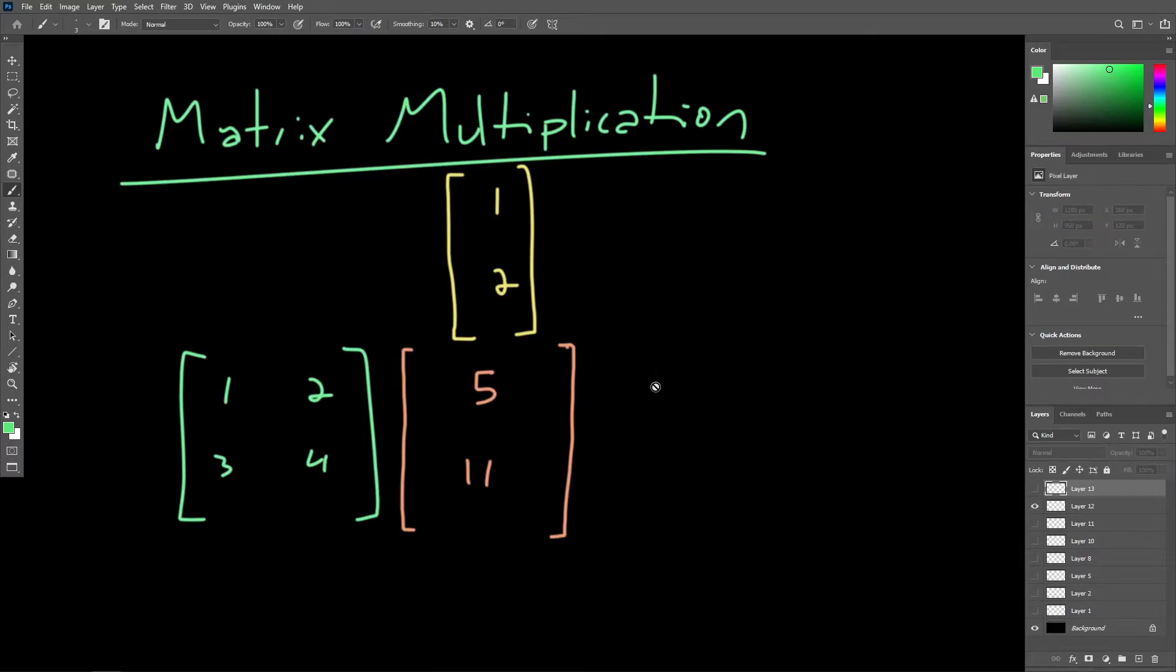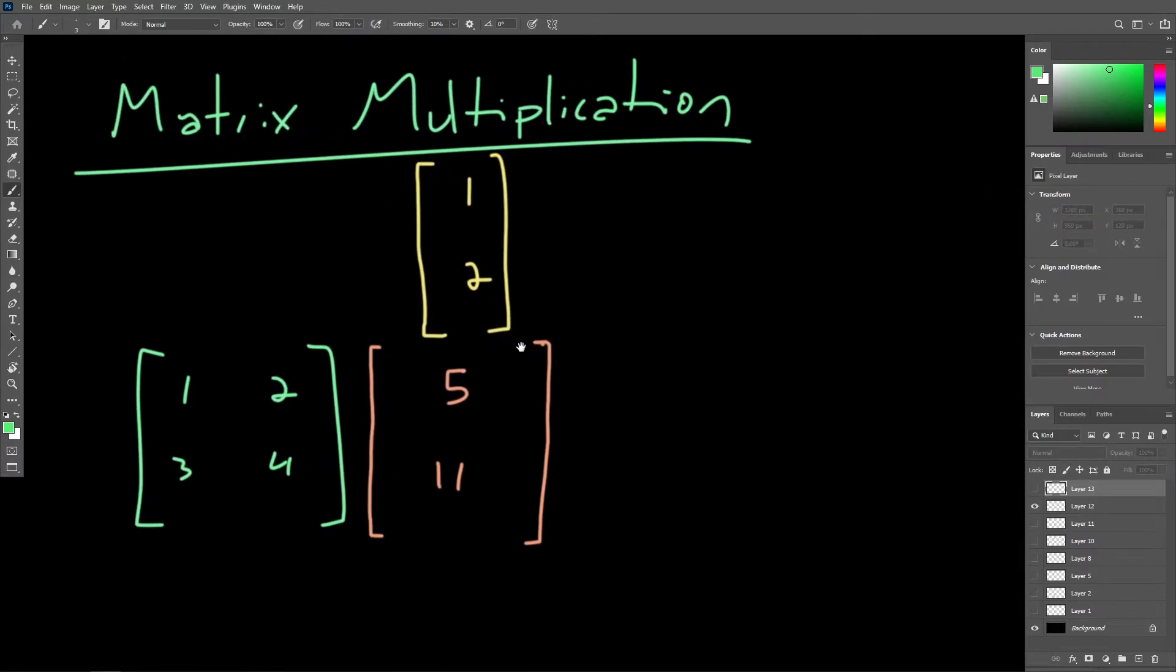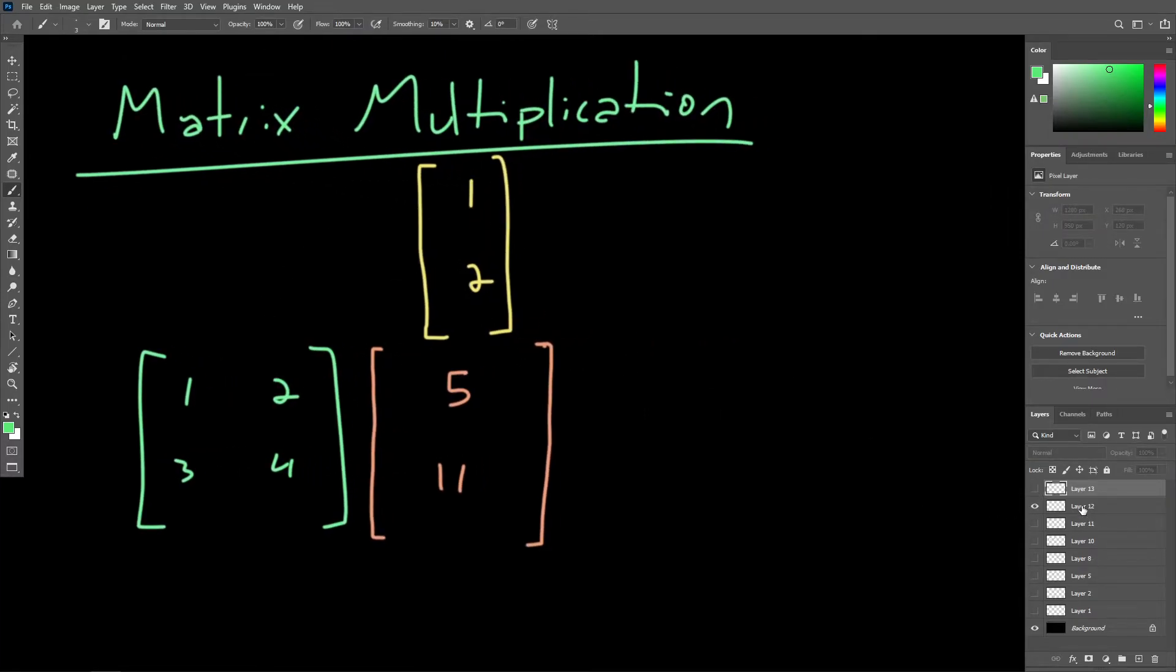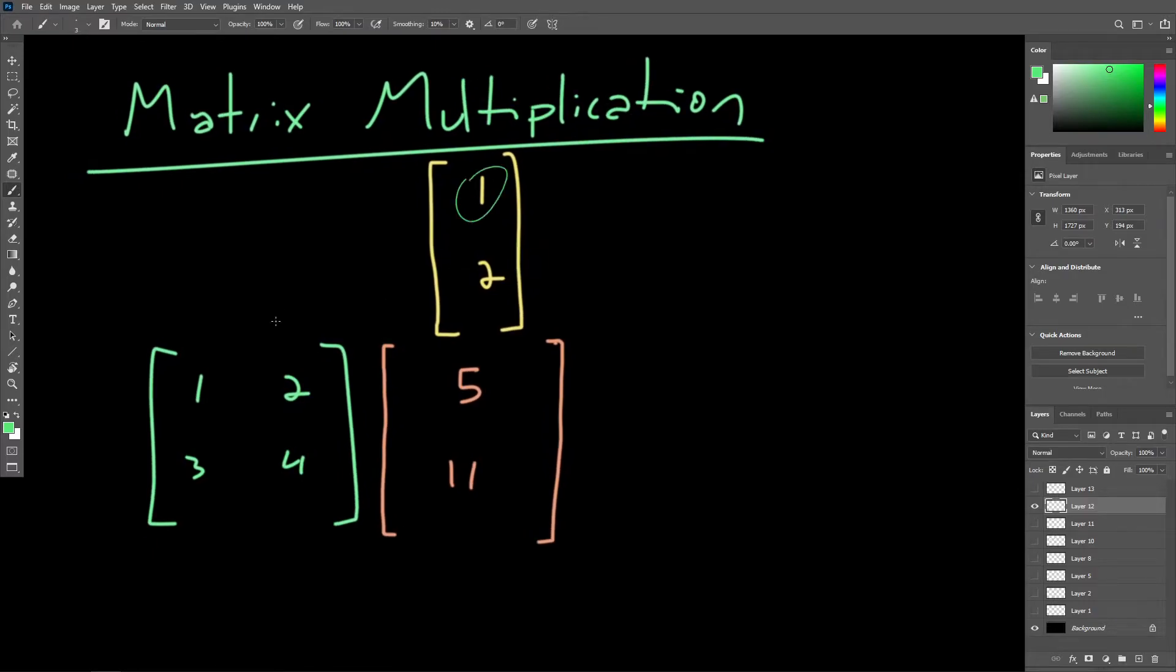Again, let's pull up that other matrix multiplication that we did in the matrix operations video. We were multiplying the associated coordinates here, and then summing the results.